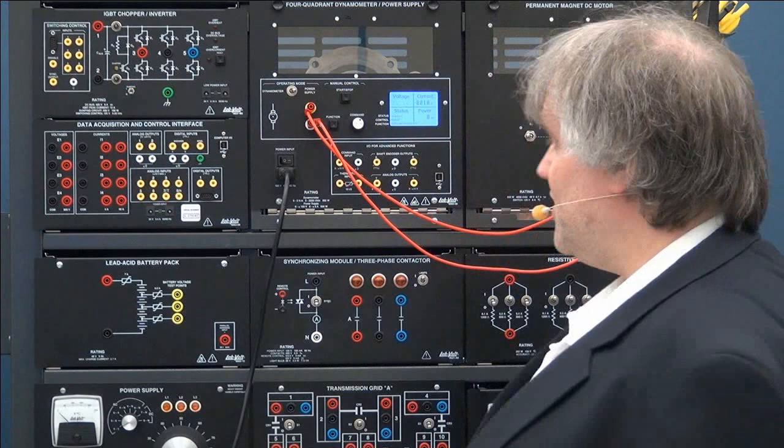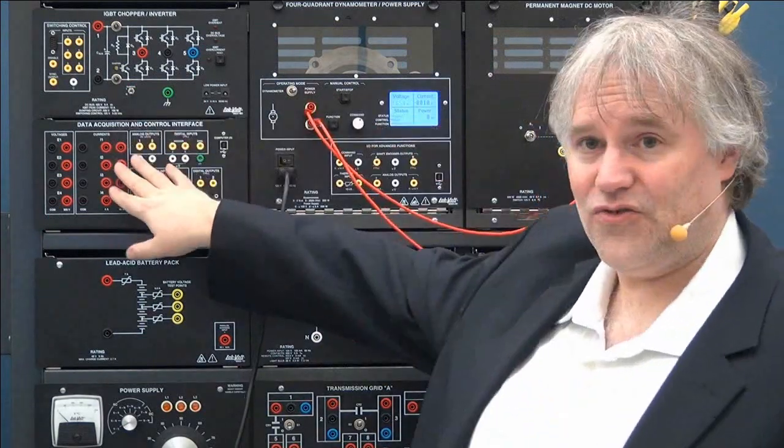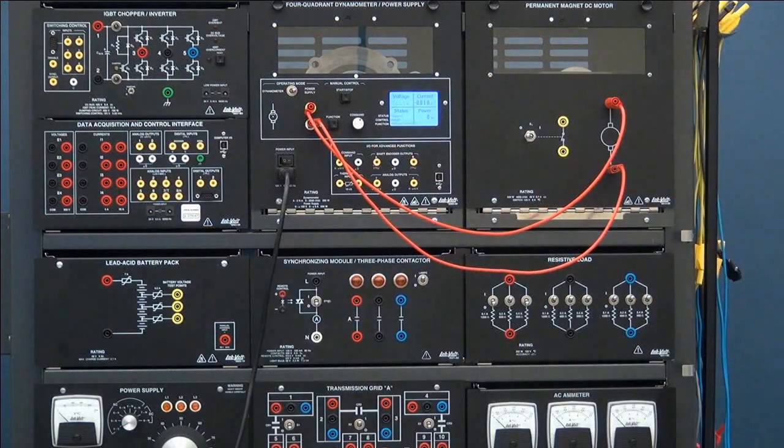Let's now check how to do the connections on the data acquisition unit. So first I will need to bring the speed into the data acquisition. In order to do that you will need smaller leads that are supplied with the system.